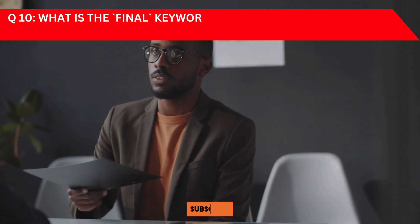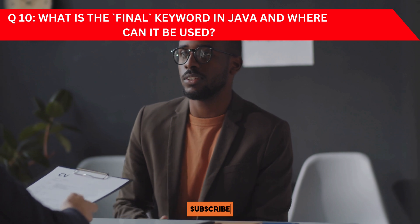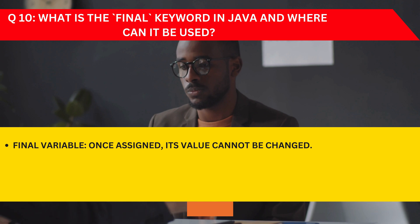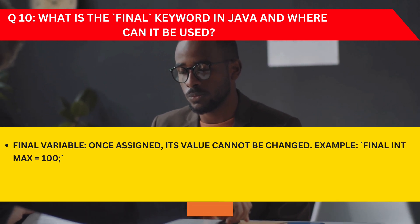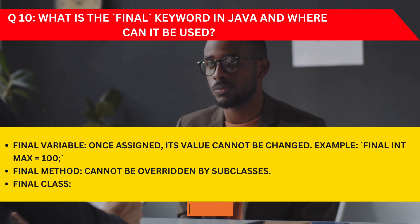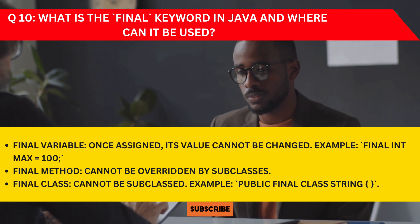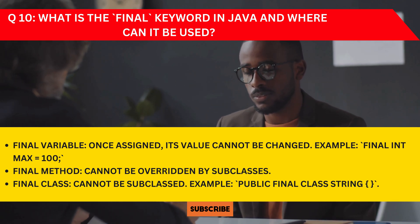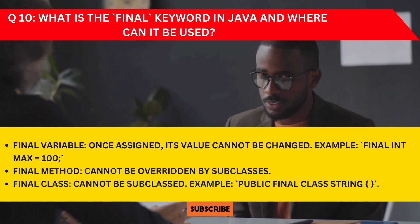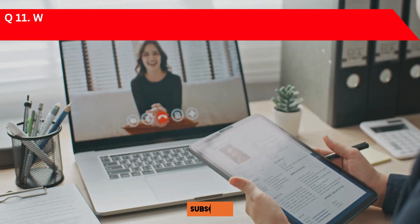Question 10: What is the final keyword in Java and where can it be used? The final keyword can be used in three forms: final variable — once assigned, its value cannot be changed; final method — cannot be overridden by subclasses; final class — cannot be subclassed. For example, public final class String. Refer to the code for better understanding.